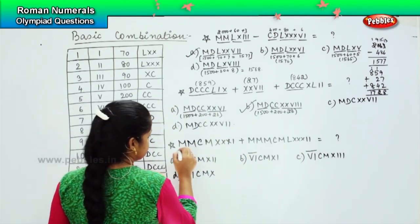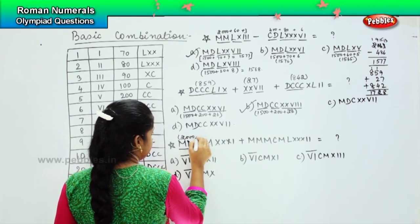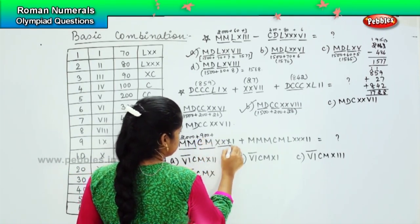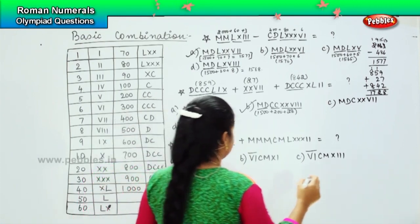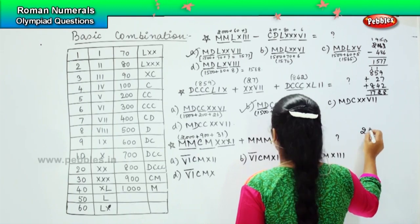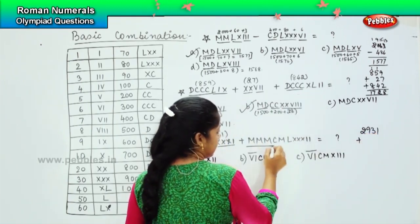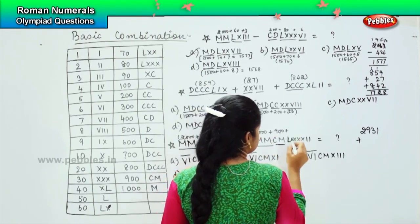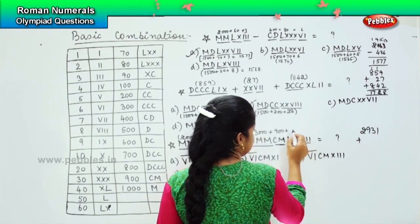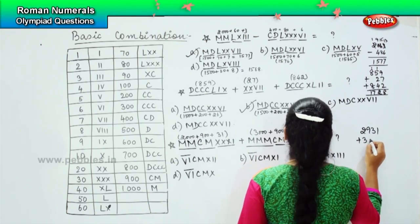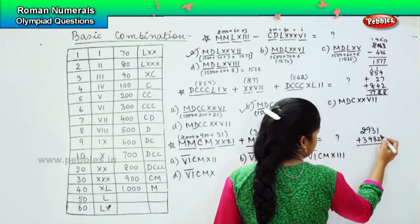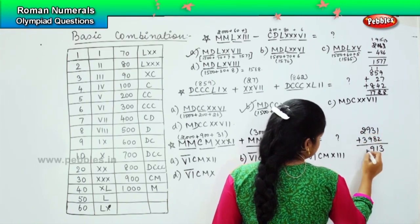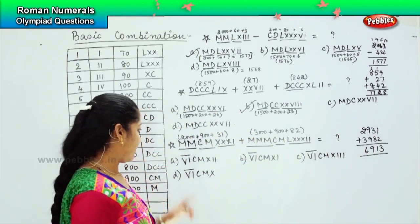Now we will simplify this. Double M is 2000 plus CM which is 900, plus triple XI which is 31, so it becomes 2931. Plus triple M which is 3000, plus CM is 900, plus L triple X double I — L triple X is 82, so which is 3982. Shall we add it? 1 plus 2 is 3; 3 plus 8 is 11; 1 plus 9 is 10; 10 plus 9 is 19; 1 plus 2 is 3; 3 plus 3 is 6. So 6913.